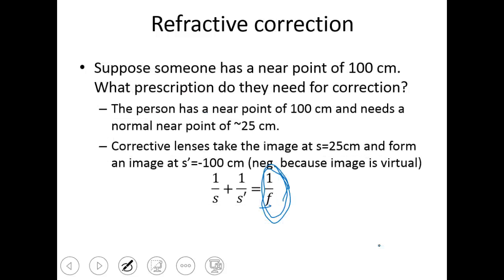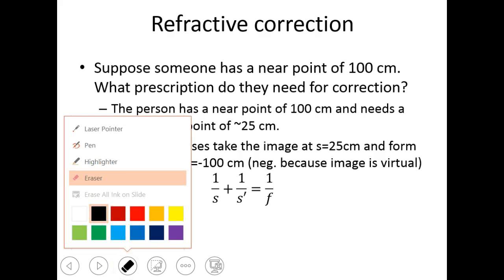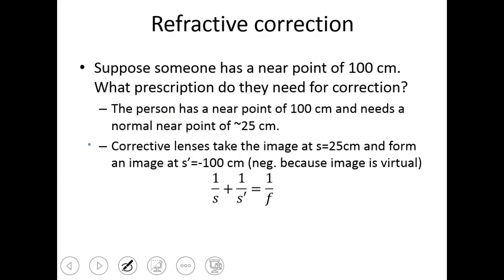All right, so suppose somebody has a near point of 100 centimeters. What prescription do they need for a correction? So their near point is 100, but we need a near point of about 25. So their near point is 100, but we want to focus that at a near point of 25. And so what we do is we say, okay, well, we want to put the image at an S of 25 centimeters and S prime at a negative 100.